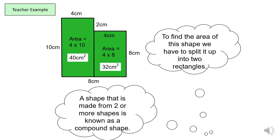So now that we have the area of each individual rectangle and we want the total area, we can now just add the two areas together and that will give us 72 centimeters squared. So the area of this compound shape was 72 centimeters squared.